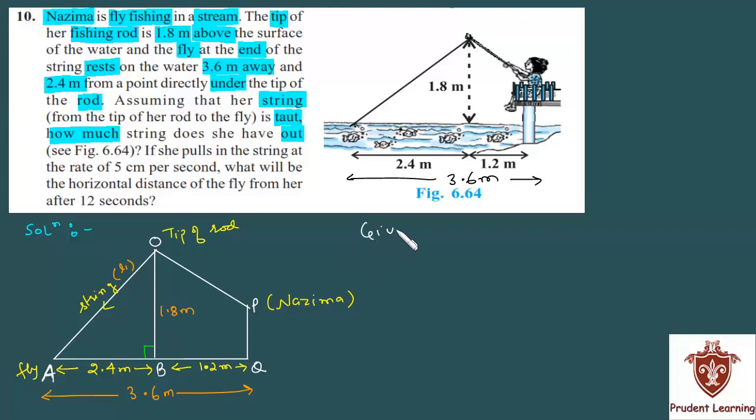Let me first write what we are given. We are given AQ as 3.6 meters. We are given OB as 1.8 meters. AB is given as 2.4 meters, and BQ is given as 1.2 meters. All values are given in the figure. We have to find the length of string, which I have assumed as OA.